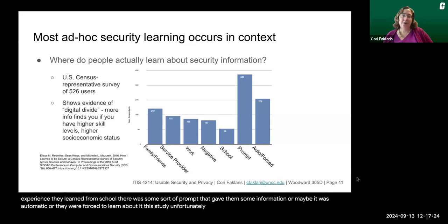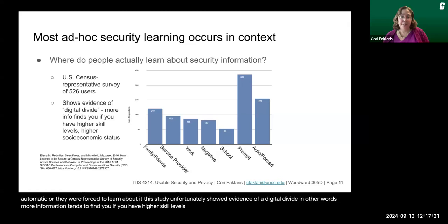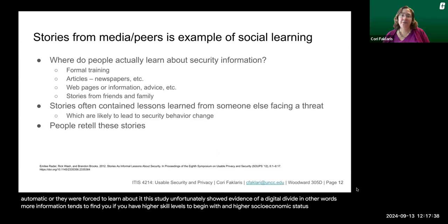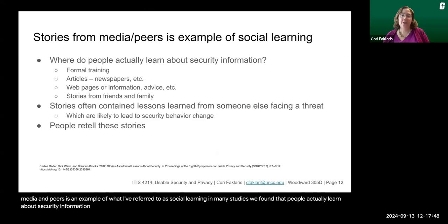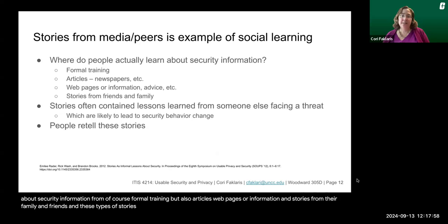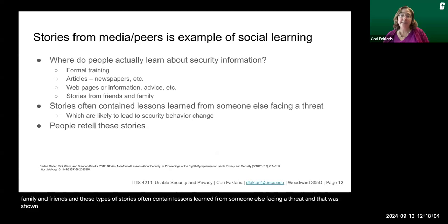This study unfortunately showed evidence of a digital divide — more information tends to find you if you have higher skill levels and higher socioeconomic status to begin with. Stories from media and peers are an example of social learning. People learn from formal training, but also articles, web pages, and stories from family and friends. These stories often contain lessons learned from someone else facing a threat, which was shown to be likely to lead to security behavior change. Moreover, people retell these stories — they have an amplification effect.